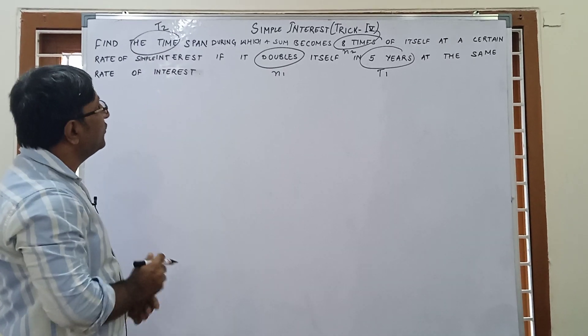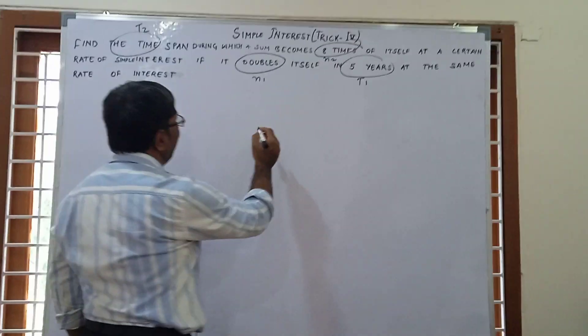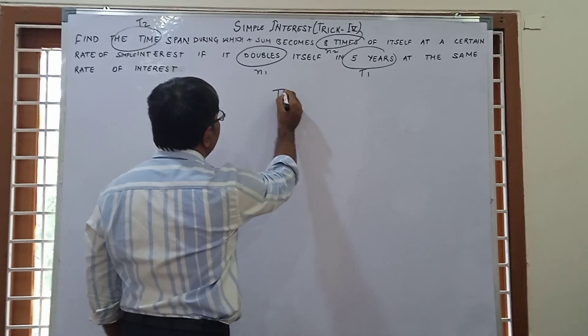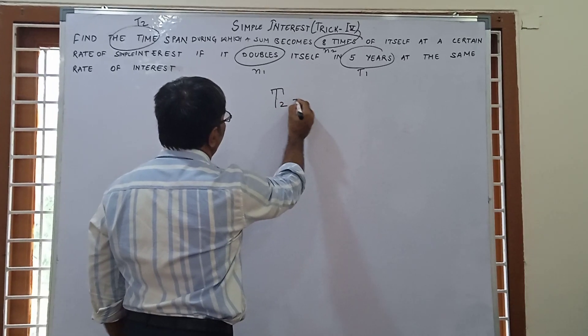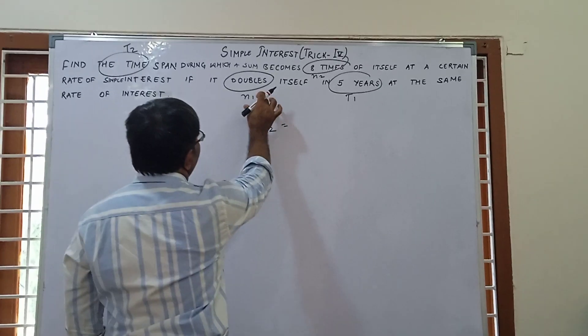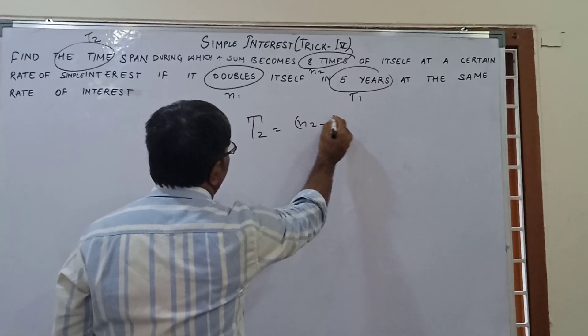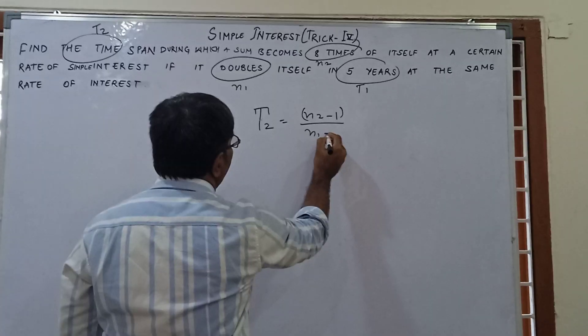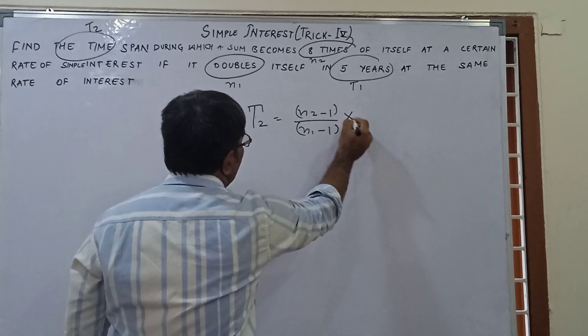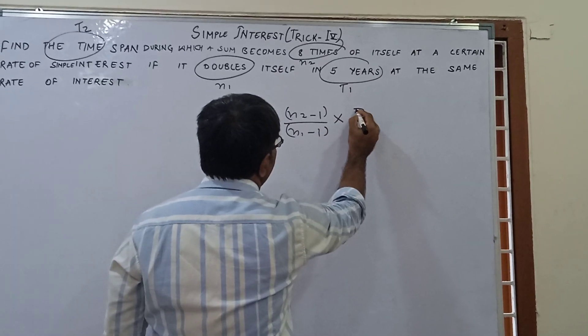Find the time spent during which sum becomes 8 times. That is N2. At a certain rate of simple interest, the rate in both cases is same. For this type of question, there is a simple technique. The technique is T2 equals N2 minus 1 upon N1 minus 1 into time period which is given first.